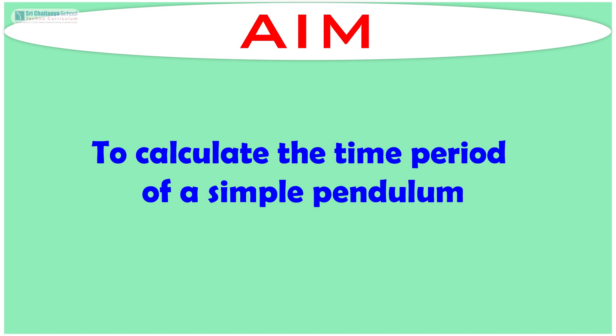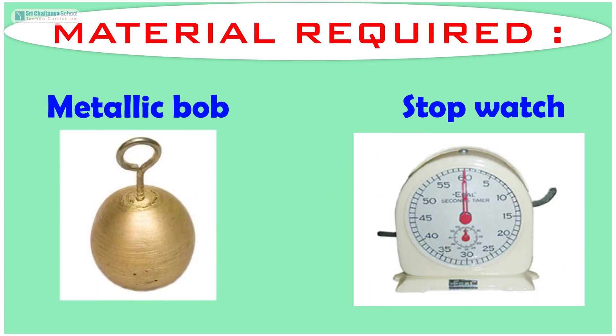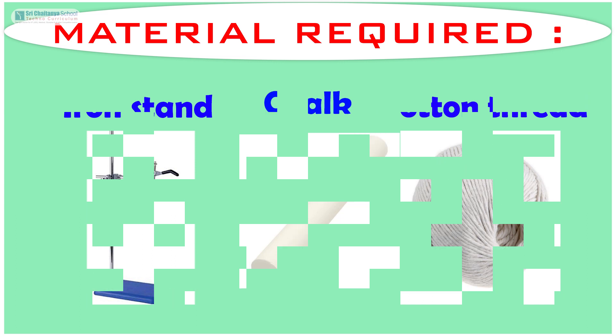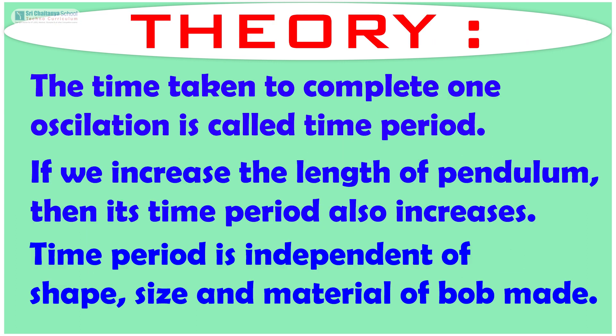The aim of this experiment is to calculate the time period of a simple pendulum. The materials that are required: metallic bob, stop watch, iron stand, cotton thread and chalk. The theory of this experiment is,